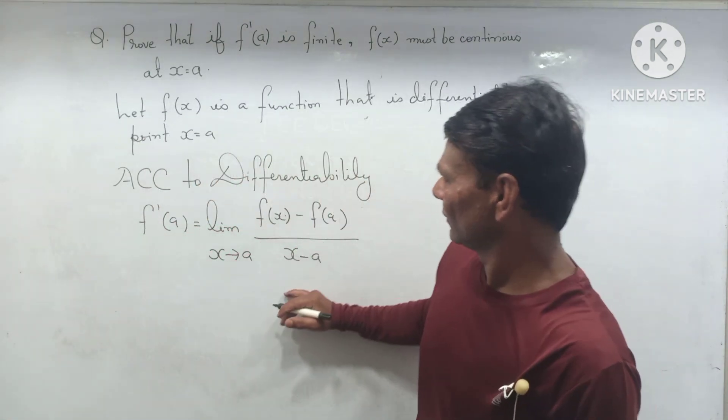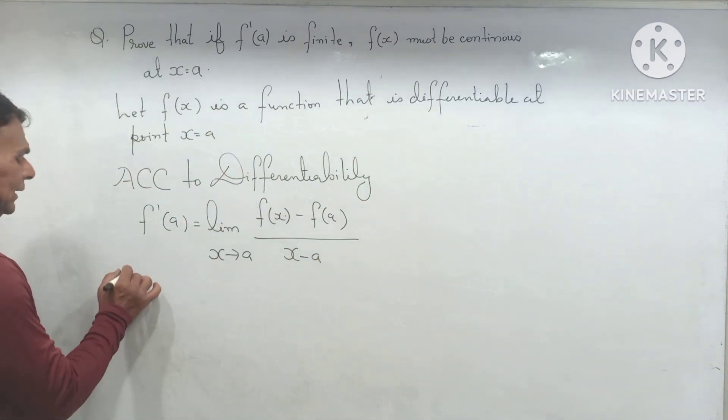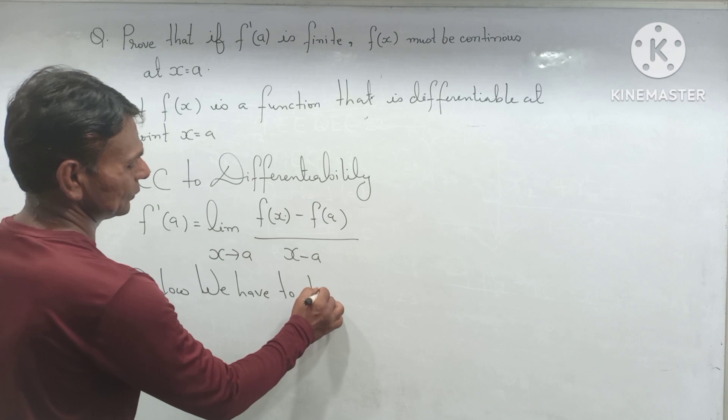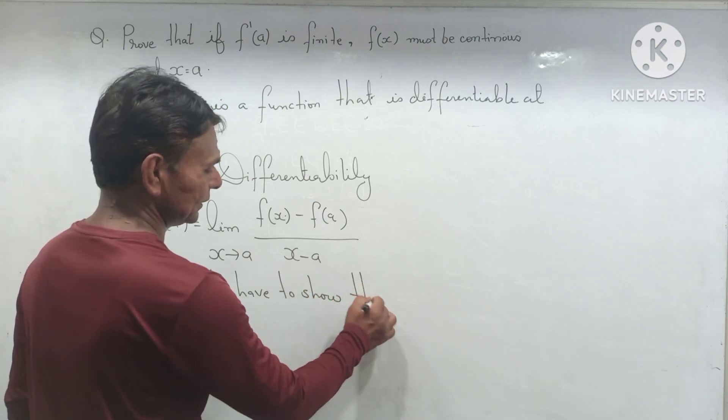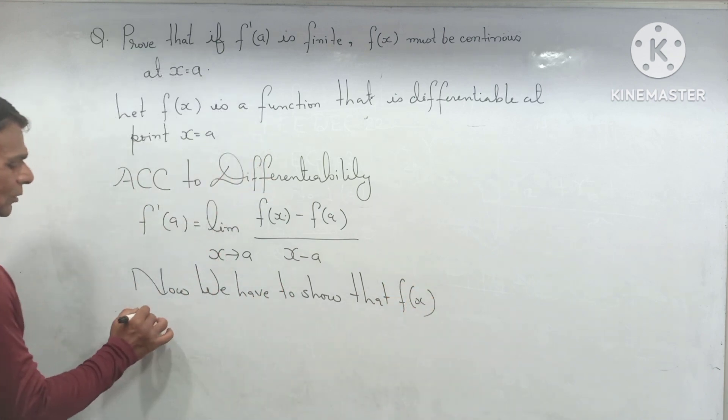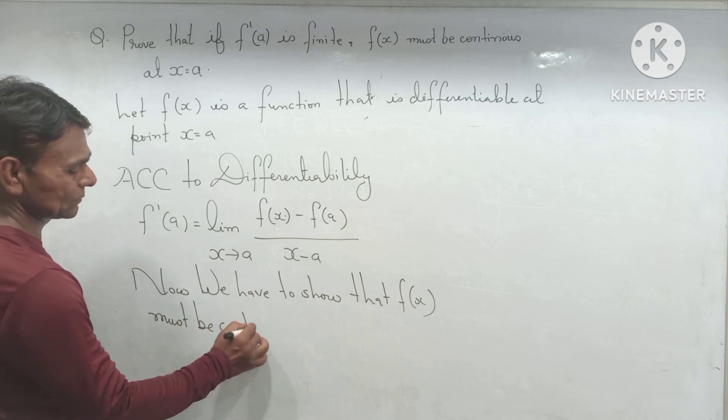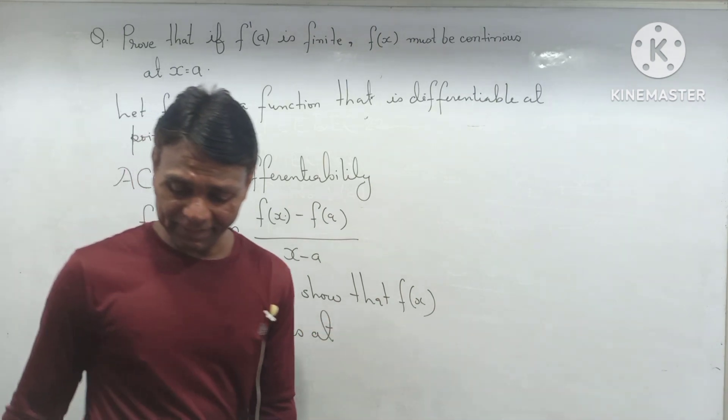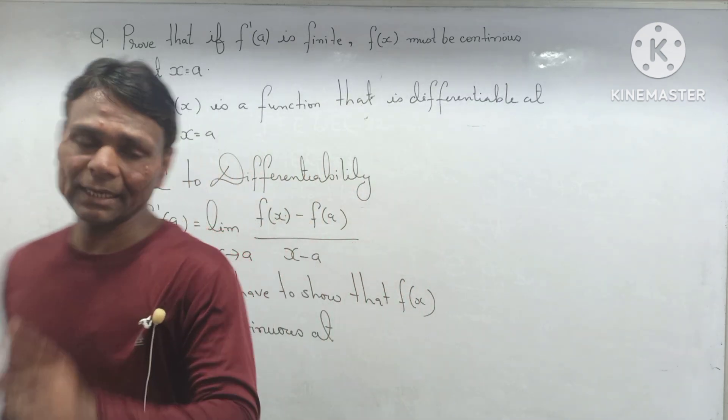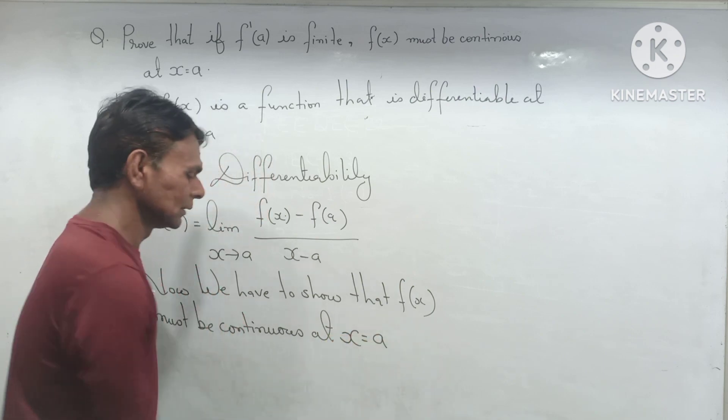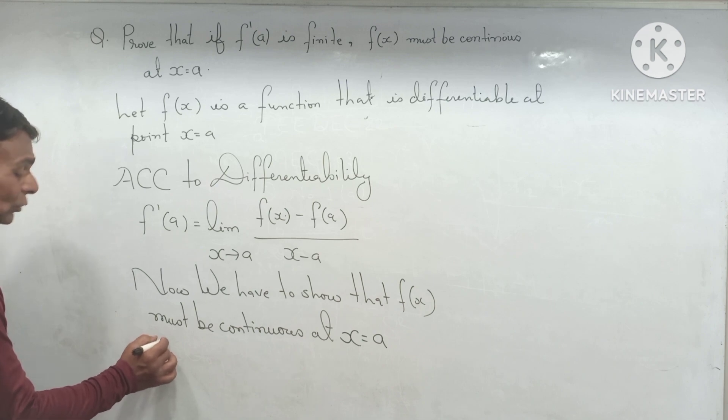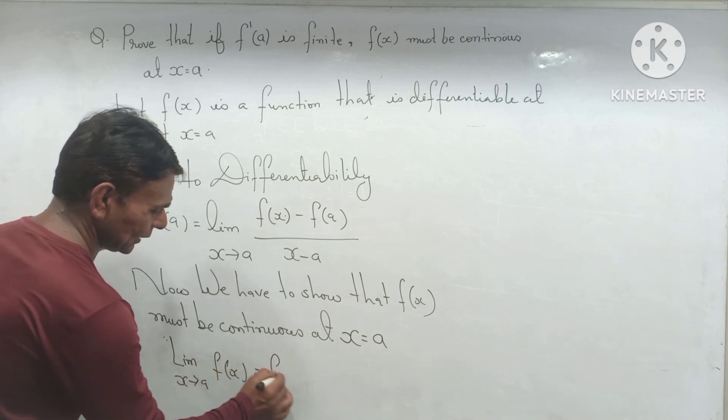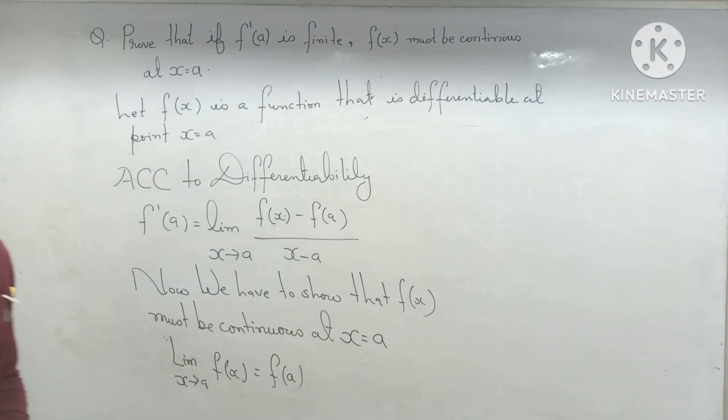Now we have to show that f(x) must be continuous at x equal to a. That is, we have to prove limit as x tend to a, f(x) equal to f(a). This we have to prove.